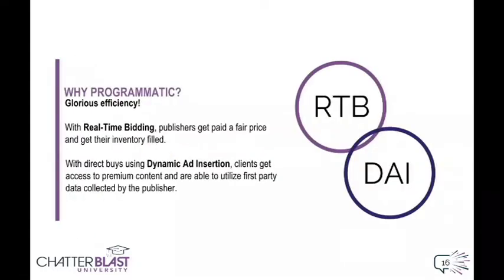So to recap, why go programmatic? Glorious efficiency. Real-time bidding is making sure that every piece of inventory is filled for publishers, and advertisers have access to lots of inventory without the hassle of a lengthy sales process. Direct buying, on the other hand, gives publishers incentive to sell their unique content with a markup, and it allows advertisers a safe place to put their ads without having to apply blacklists.